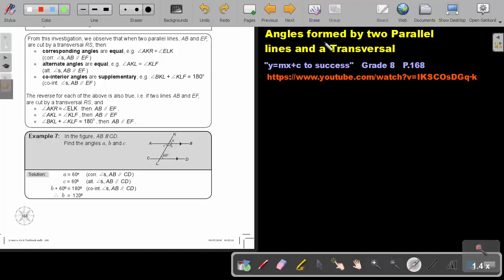Part 6. Angles formed by two parallel lines and a transversal. You will find this on page 168 in the Namibia Mathematics Grade 8 textbook Y equals MX plus C to success.